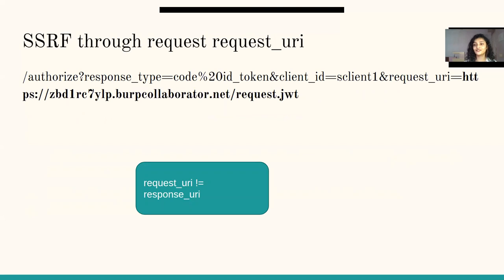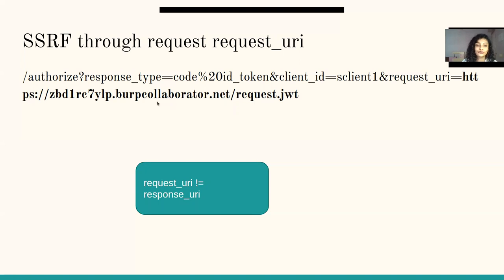You should not miss the request URI — you can find SSRF vulnerabilities there. SSRF (server-side request forgery) is where you make a request to the server and get back the response you want. Try any SSRF payload in the request URI, complete the flow, and see if you get a hit. Make sure you don't confuse request URI with response URI — they are different parameters.